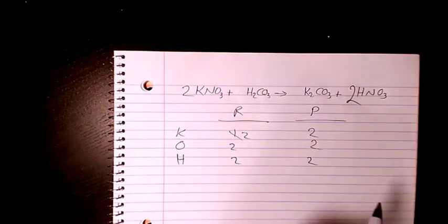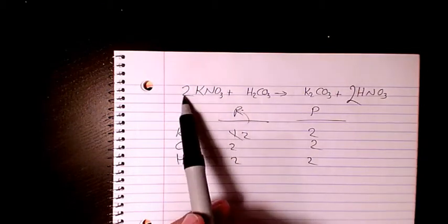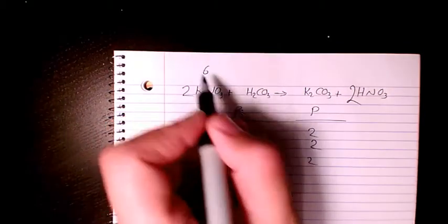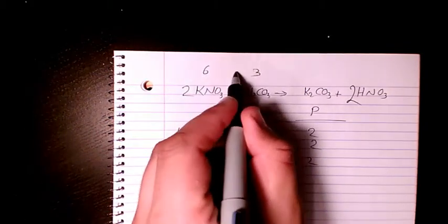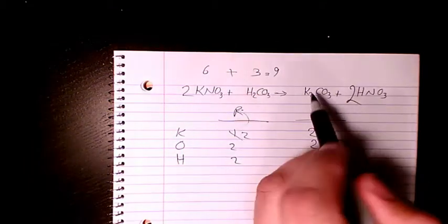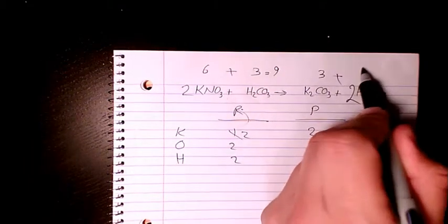And the only remaining element is oxygen. Two times three is six. And here we have three which is gonna be nine. In this case we have three, two times three is six, and it's nine as well.